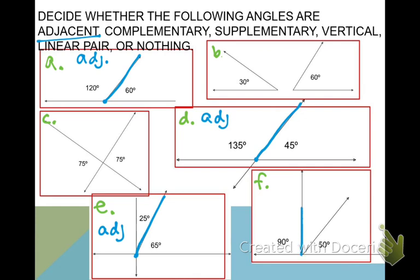So again, adjacent means that the angles would have to have a number, a wall, a number. Vice versa, a number, a wall, a number. And that's not happening on F.